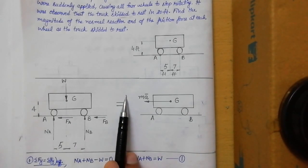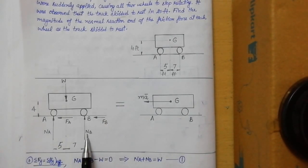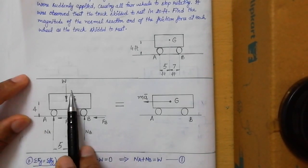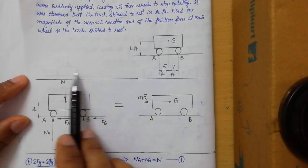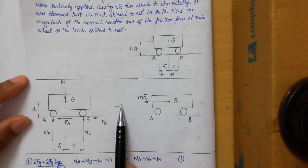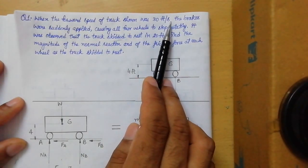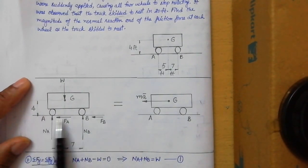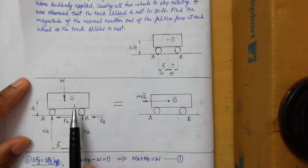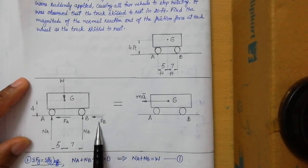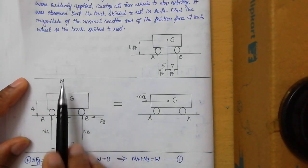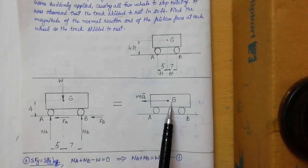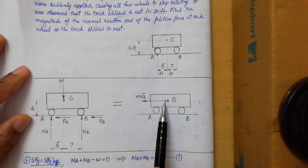We have labeled the reactions NA and NB at front and rear wheels, the friction forces at both wheels, and the weight W. These are the only forces acting on the truck. This force system is responsible for the retardation: earlier the truck was traveling at 30 feet per second, and after the brakes were applied, the truck skidded and decelerated. The retardation is caused by the friction force, so the acceleration vector is attached at the center of gravity in the opposite direction to motion.